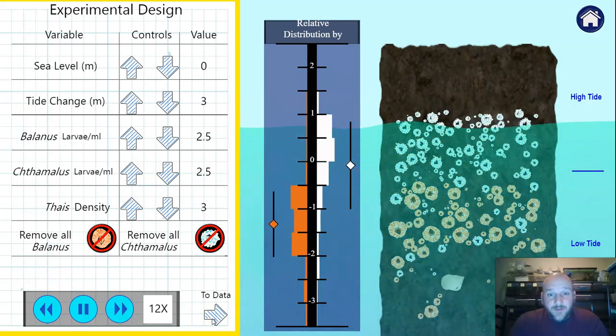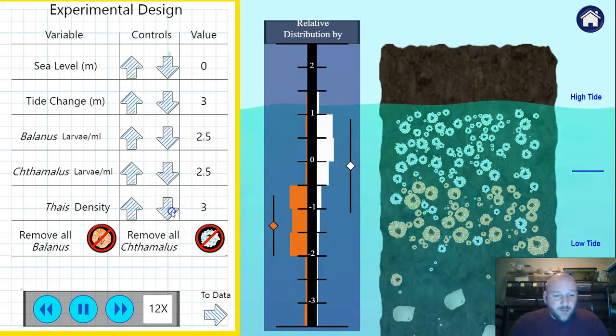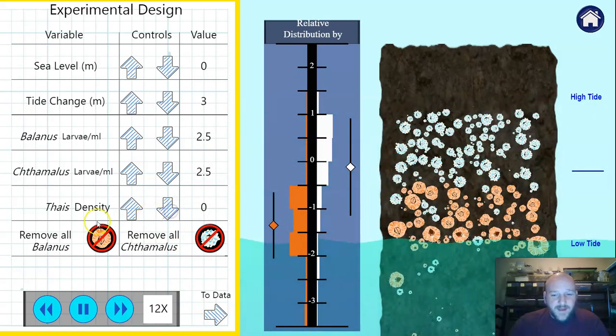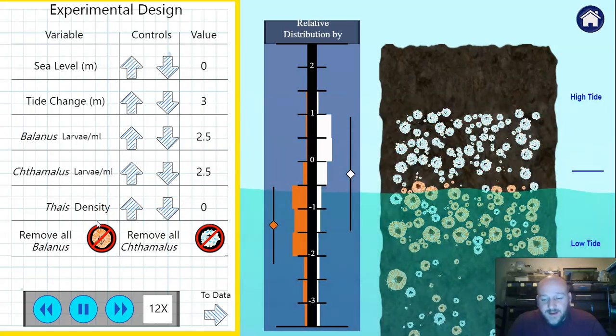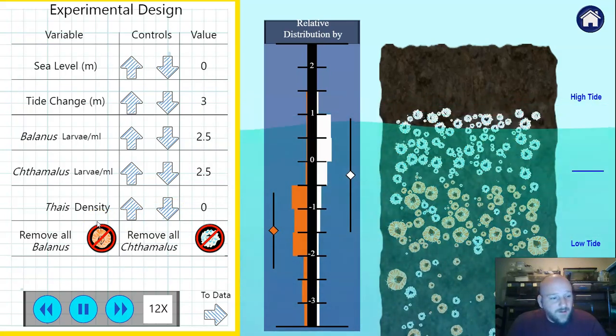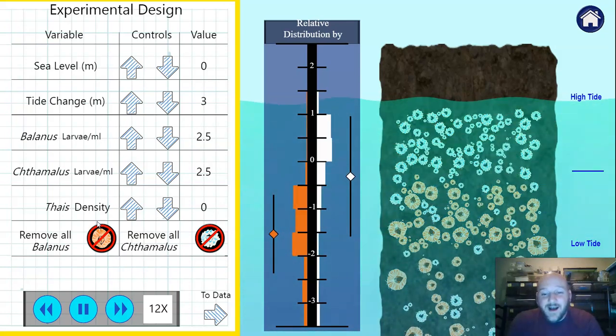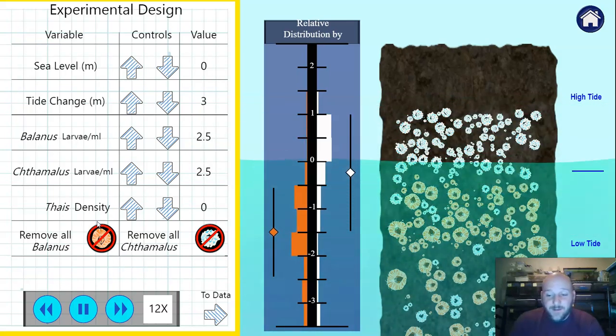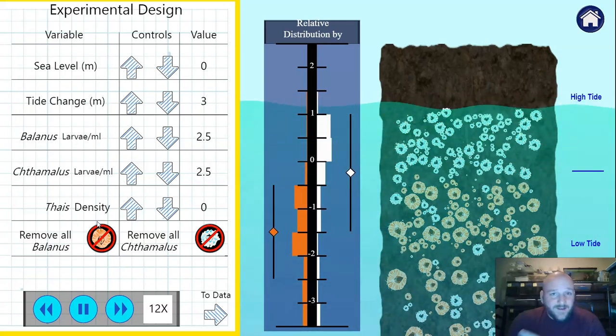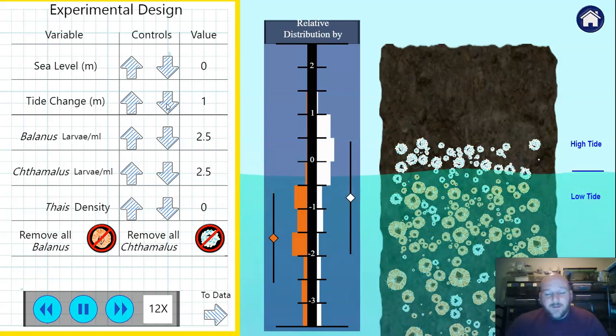Once we go back here we can actually do something to change one of these variables and see how that might affect things. Let's try removing the predators and see what that does. If we remove the predators altogether, it looks like we start to see a lot more of the one population starting to kind of work its way down the rock, which is good. So you can see that there's a biotic factor that's keeping them from colonizing too low where the snails can't get up too high.